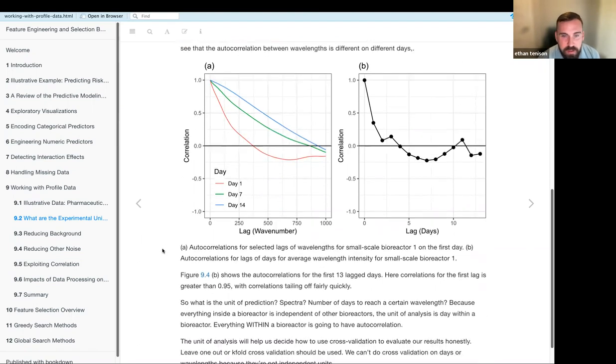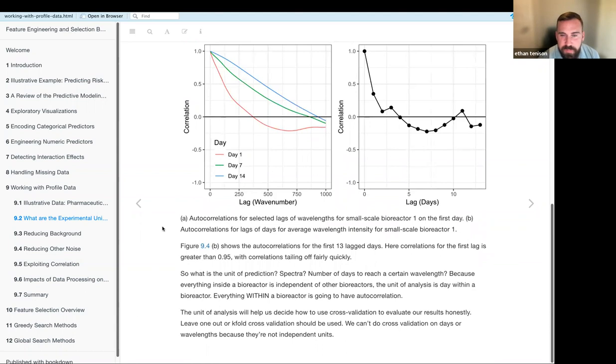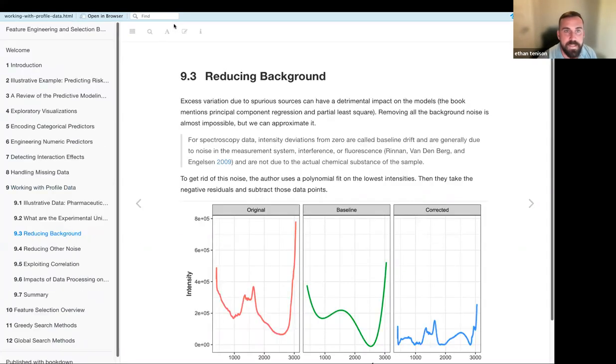And this is just another representation of that. This tells us that we should not be using the wave numbers as our unit of analysis because of all the correlation. And a lot of what we're going to be talking about is how can we pre-process the data to get rid of noise and also to get rid of that correlation within our bioreactors.